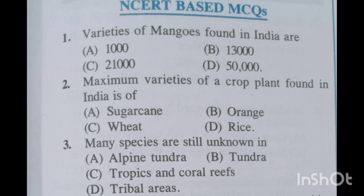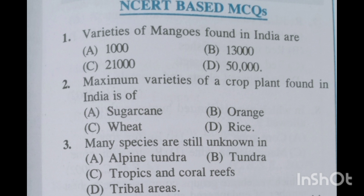Question number two: maximum varieties of a crop plant found in India is — option A: sugarcane, option B: orange, option C: wheat, option D: rice. For this question, option D will be correct: rice.